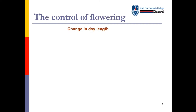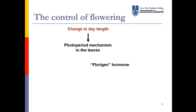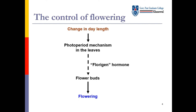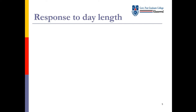Some plants regulate their flowering this way — اس طرح سے plants اپنی flowering کو regulate کرتے ہیں. The control of flowering involves: change in day length, photoperiod mechanism in the leaf, florigen hormone, flower buds, and then flowering.